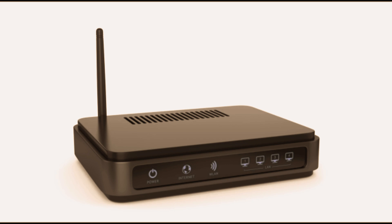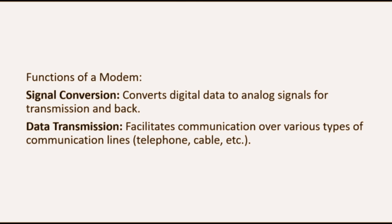A modem modulates and demodulates signals for data transmission over various types of communication channels such as telephone lines, cable systems, or satellite links. The first function of a modem is Signal Conversion, wherein it converts digital data to analog signals for transmission and vice versa.